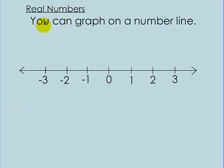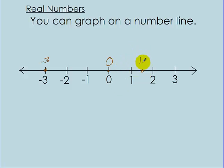Real numbers are things you can graph on a number line. Below I have a number line. Numbers you graph on the number line could be negative 3, 0, 1.5, negative 1 and a half, or 3.5. These are all numbers we can put on the number line, so they're all real numbers.